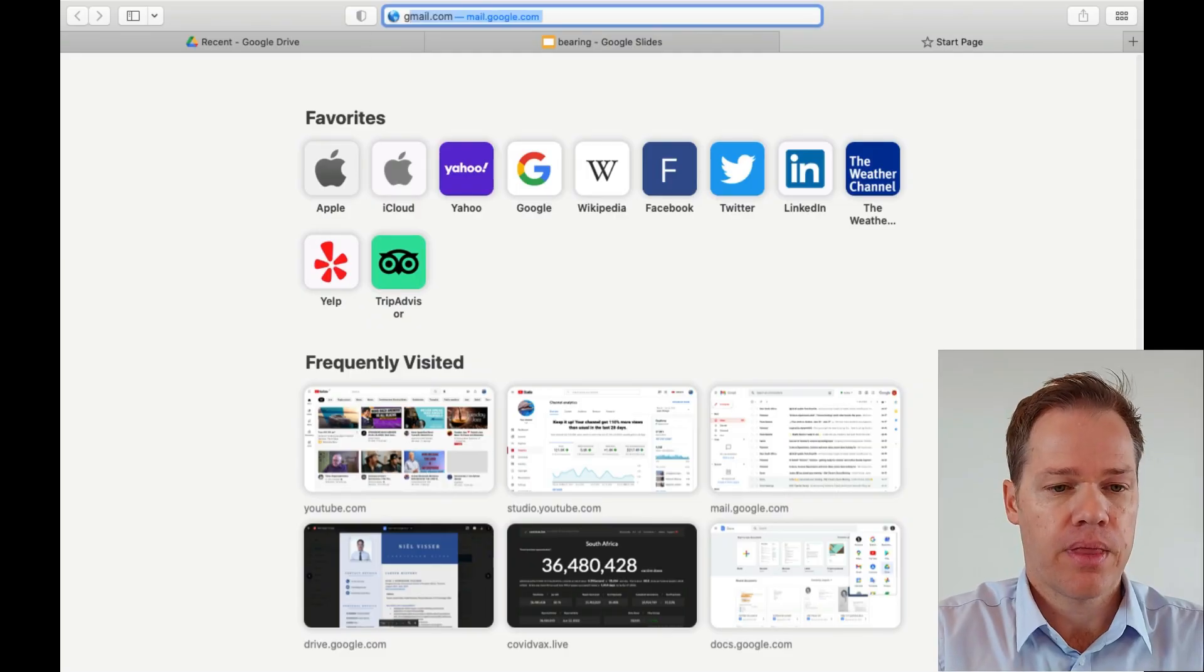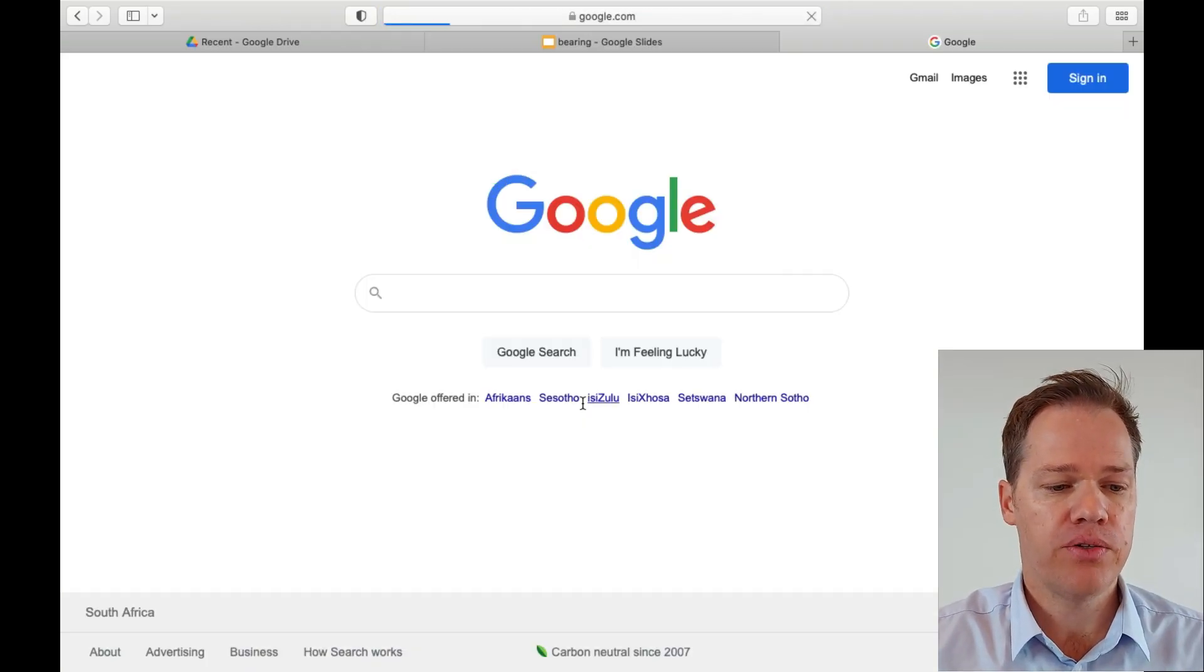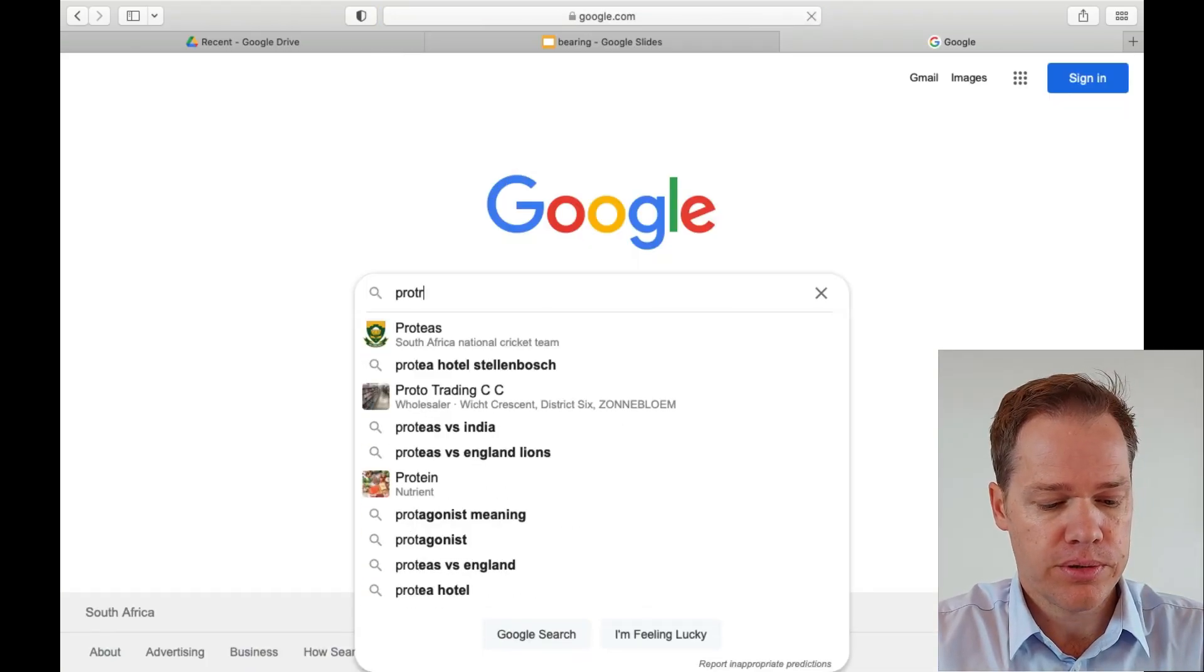All you need is a device like a computer or a laptop, and I'll show you exactly how it's done. So what we need to do first is we need to go to Google, and we are going to search protractors.